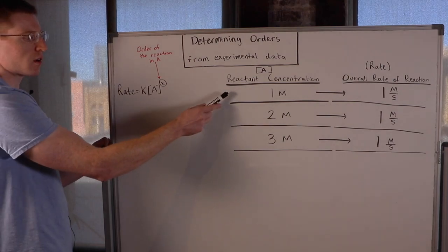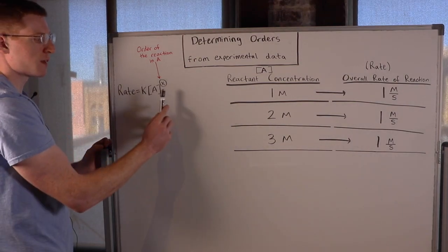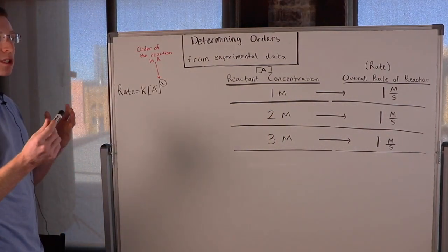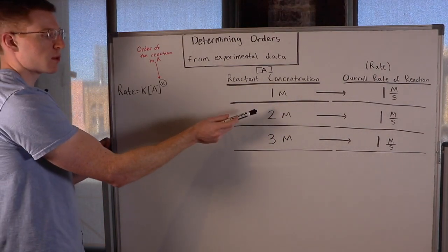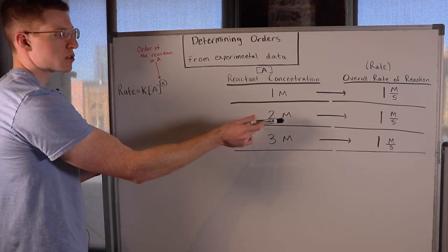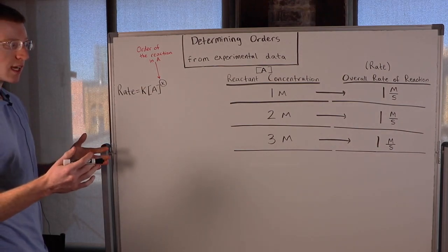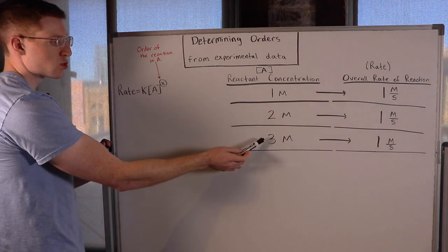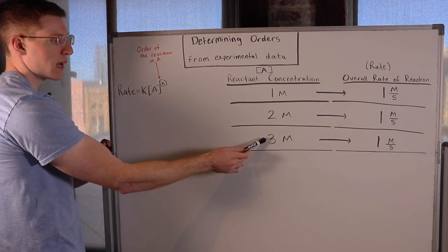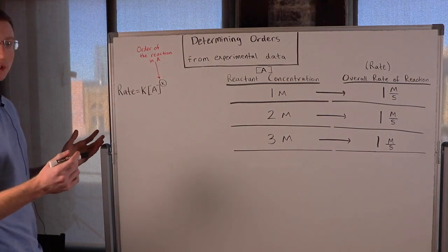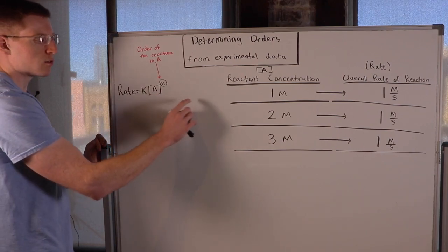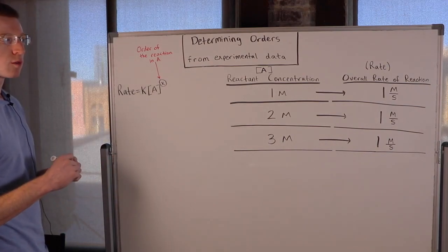In the first trial I set the initial concentration of A to be 1 molar, and that produced an overall reaction rate of 1 molar per second. Then I doubled the concentration of A to 2 molar, and that produced an overall rate of again 1 molar per second. Finally I tripled the concentration of A from 1 to 3 molar, and still the overall rate of the reaction was 1 molar per second. So we can see that the concentration of A really doesn't have any effect on the overall rate of the reaction.